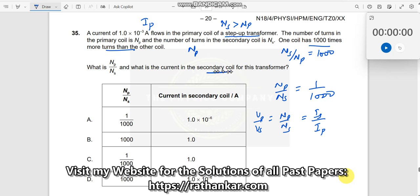I need IS, I secondary. So I will write IS by IP is equal to NP by NS, which is 1 by 1000. And thus I can now write IS is equal to 1 by 1000 times IP.